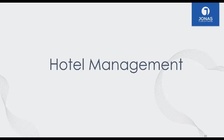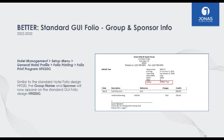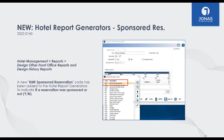The next module is Hotel Management. For the folio printout, if you do any group reservations or member-sponsored reservations, whenever you print out that hotel folio it will now list the group name or the member who sponsored that reservation. Additionally, in the Report Generator in the hotel module, you can now include sponsored reservations as a column in your report. You can create custom reports in the hotel module — we have preset reports, but you can build your own.